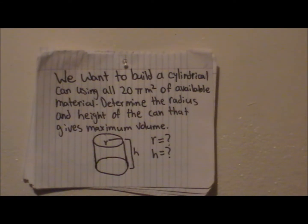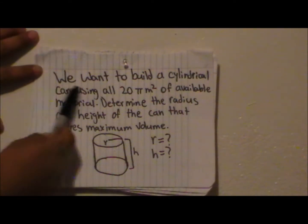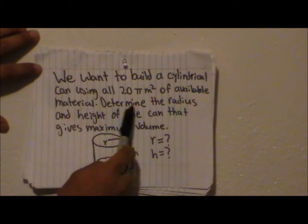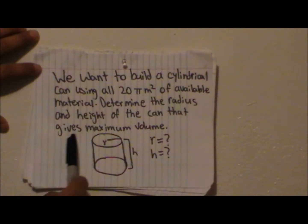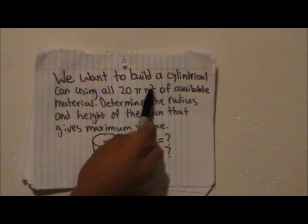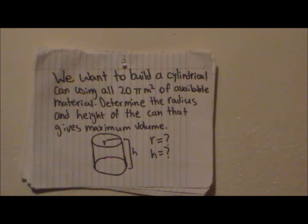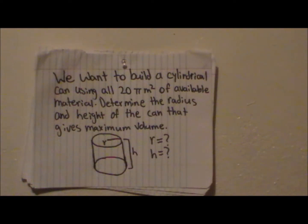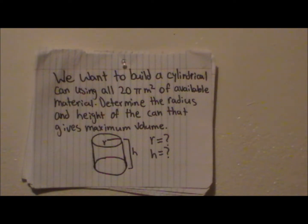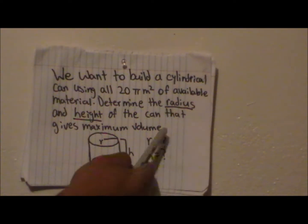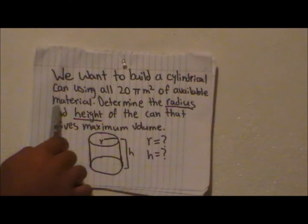So this is the optimization problem that they're giving us. We want to build a cylindrical can using all 20 pi meters squared of available material. Determine the radius and height of the can that gives maximum volume. So this is what optimization is. They give you a certain number of available material, and you're trying to find either the maximum or minimum of something. In this case, it's volume, and they want us to find the radius and the height. So that's what we're actually looking for, but they're not giving it to us. They're only giving us available material.